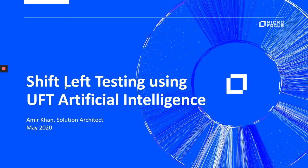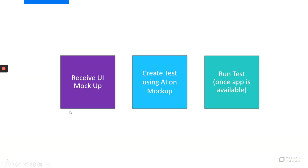In this short video I'm going to demonstrate how you can use the UFT artificial intelligence engine to do shift-left testing based on mock-ups provided by the UX team. The workflow will look like: you receive a mock-up, either as an image or something viewable in the browser, and then based on this mock-up you create a test using the UFT AI engine. Once you have created the test and the application is available, you can run the test to see how the coverage looks.